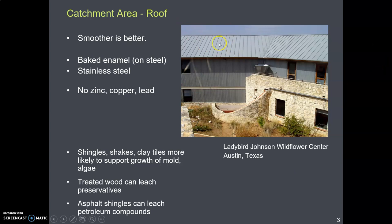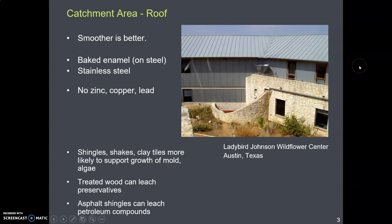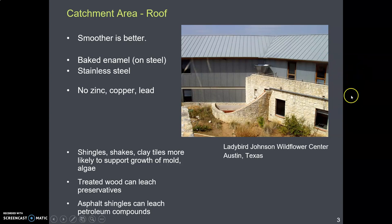What we really want is something like a standing seam metal roof, and if you can get one with an enamel or powder-coated finish, that's good. We don't want wood with preservatives on it, and we don't want anything with copper, lead, or zinc. Copper is toxic to plants and isn't too good for us in large quantities either.